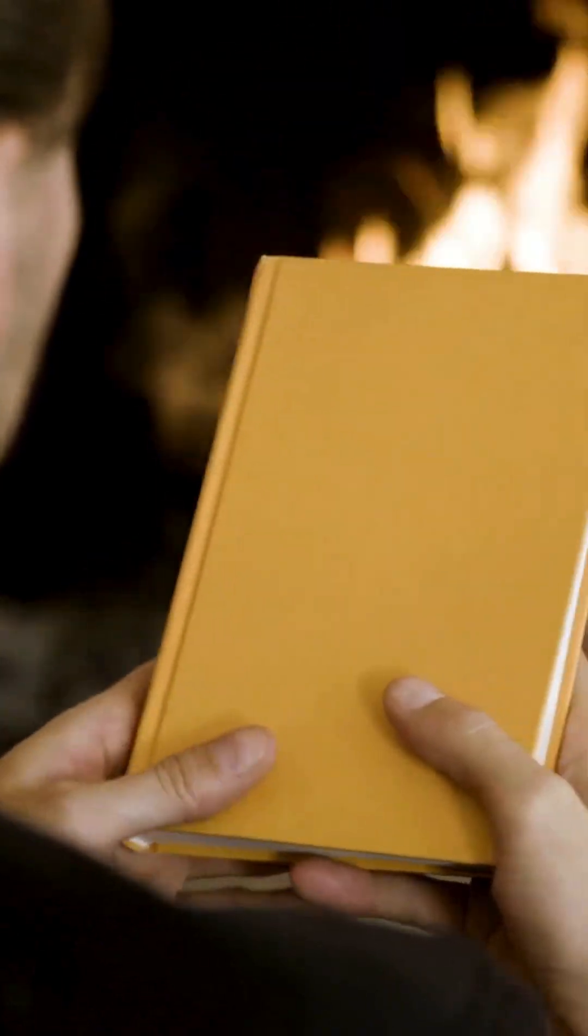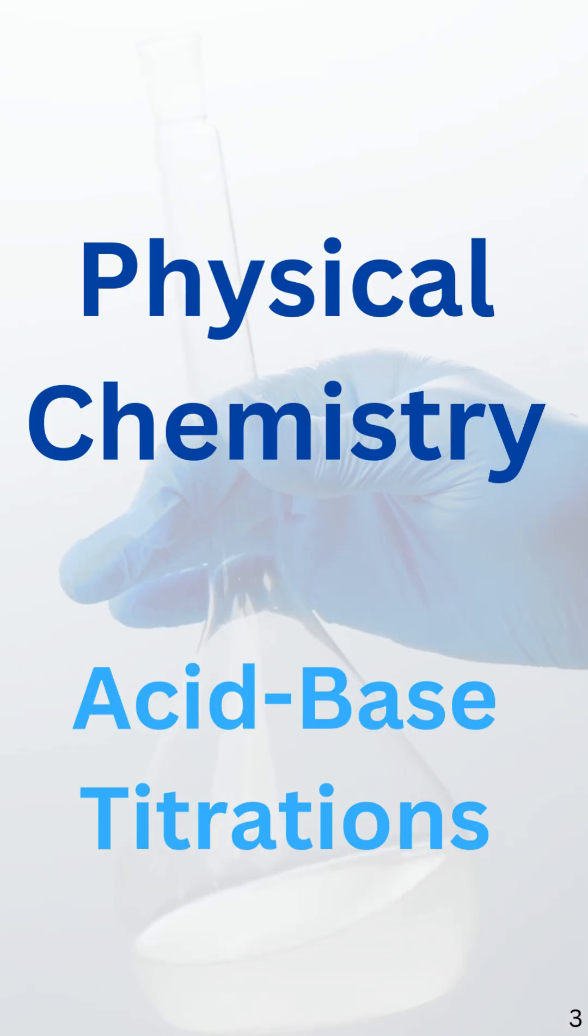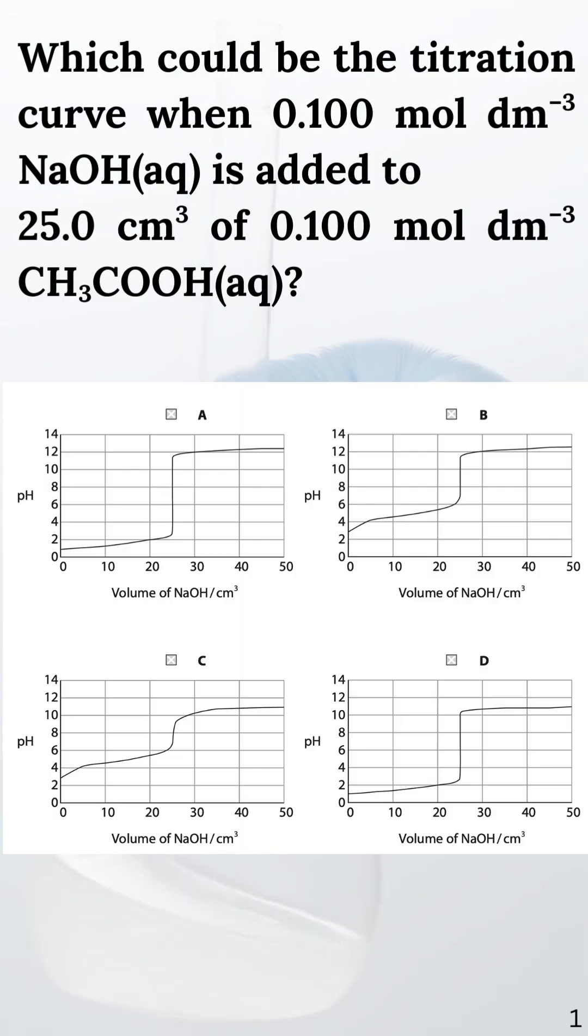Are you finished studying physical chemistry? Let's do some practice with acid-base titrations. Which could be the titration curve when 0.1 moles per cubic decimeter of sodium hydroxide is added to 25 cubic centimeters of 0.1 moles per cubic decimeter acetic acid?